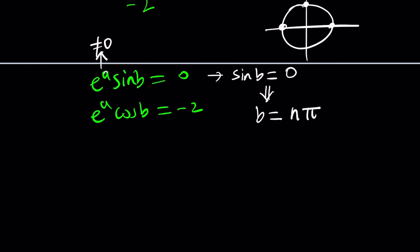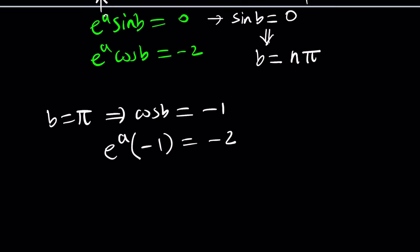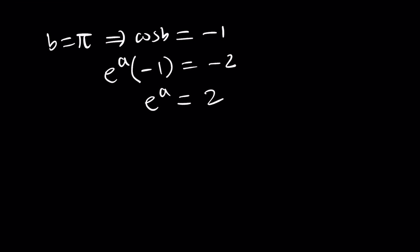If b is equal to pi, then cosine of b is going to be negative 1. And from here, we get e to the power a times negative 1 equals negative 2. And this makes a lot of sense, because this means e to the power a is equal to 2, which is acceptable. Remember, a is real, so e to the a is also real. And from here, we can safely say that a is equal to ln 2. If you natural log both sides, that's what you're supposed to get.